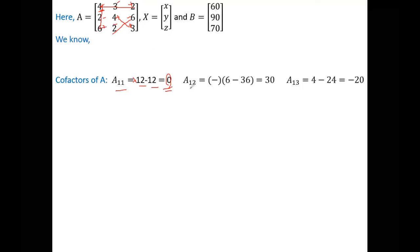Now similarly for A12 you see this is negative. I already told you if it is 1 plus 2 equals 3, odd number, so an extra negative is there. So directly we can put negative sign here. Now eliminate this row and this column. Ultimately what we will have? 2 times 3 is 6 minus 6 times 6 is 36. 6 minus 36. Extra negative is already there, so ultimately we will have 30. Similarly A13, eliminate this row and column, we will have 2 times 2 is 4 minus 6 times 4 is 24. 4 minus 24, ultimately negative 20. So similarly we can find out the value of the rest of the cofactors.